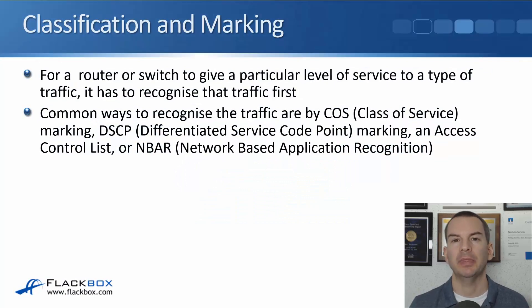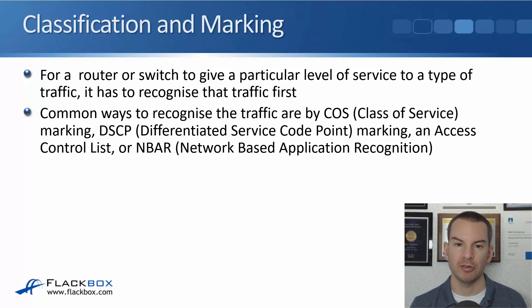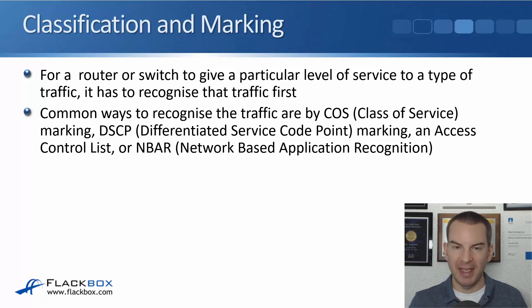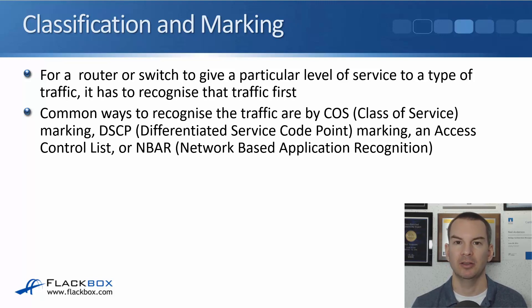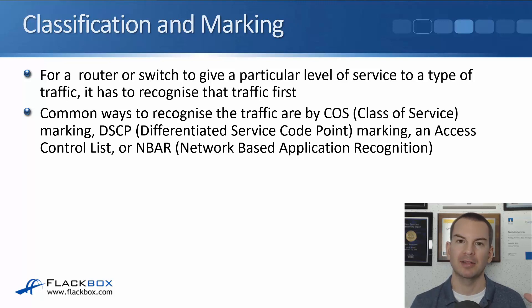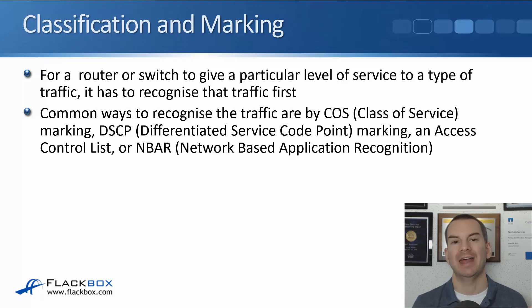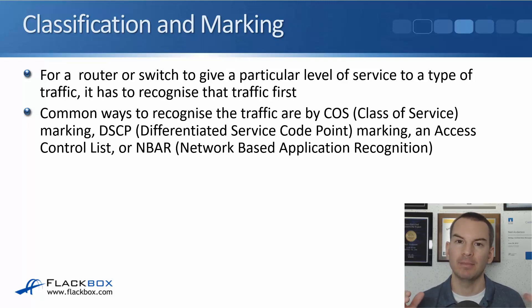In this lecture you'll learn about classification and marking, which is part of your QoS configuration. For a router or switch to give a particular level of service to a type of traffic, it has to recognize that traffic first. Common ways to recognize traffic are by CoS (class of service), a layer 2 marking; DSCP (differentiated services code point), a layer 3 marking; an access control list; or NBAR, network-based application recognition.